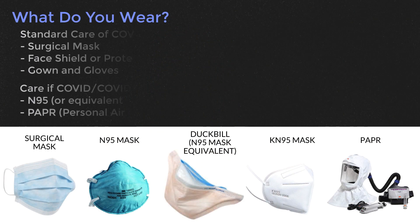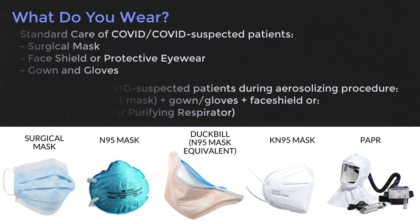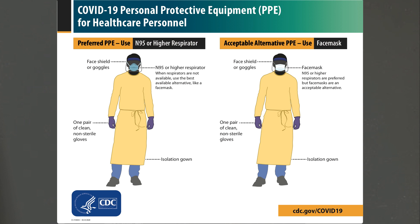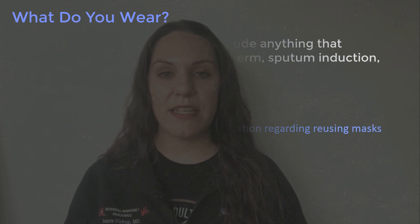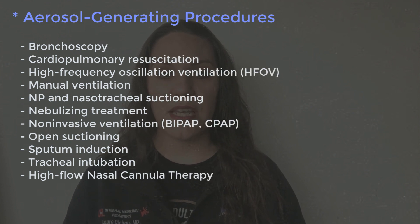For a suspected or known COVID patient, recommended PPE includes a face mask, face shield or protective eyewear, and contact precautions — gown and gloves — when not doing aerosolizing procedures. For aerosolizing procedures, you should wear either an N95 with face shield plus gown and gloves, or a PAPR — a personal air purifying respirator. Aerosolizing procedures include nebulization, obtaining the COVID PCR from the nasopharynx, providing high-flow nasal cannula or BiPAP, and intubation.